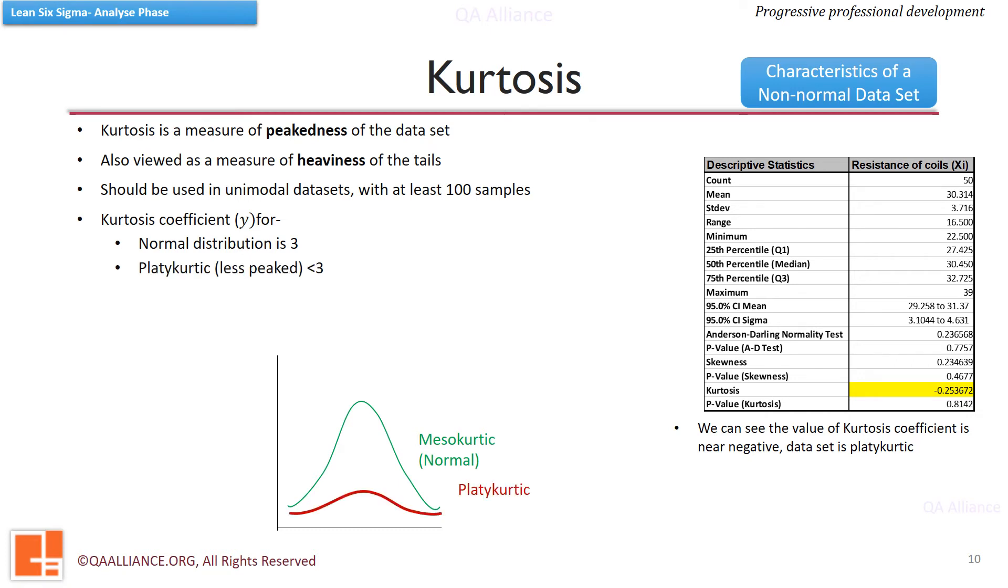If it is less than 3, it is less peaked and the shape is called platykurtic. When the coefficient is more than 3, the shape of the distribution is more peaked and called leptokurtic.